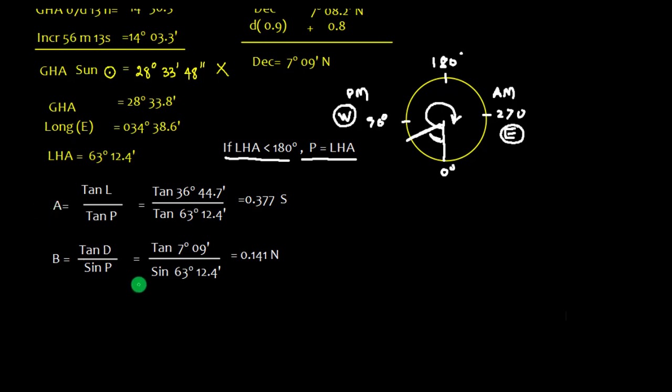Similarly, we need to find B, which is tan declination upon sine P. The value of tan declination: declination we already obtained, 7 degrees 09 minute. The value of P is 63 degree 12.4. So we get 0.141 N. Now we need to find the value of C. This is south, by the way, this is north. So we need to subtract from south to north, and the value we get is 0.3236, and this is south. Why south? Because A is greater than B.